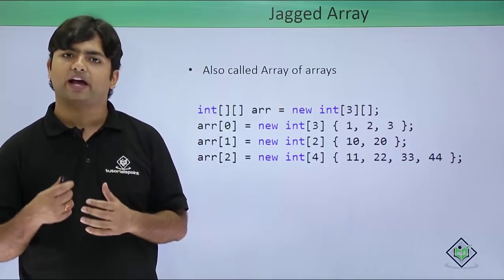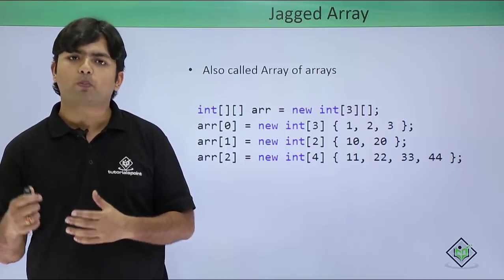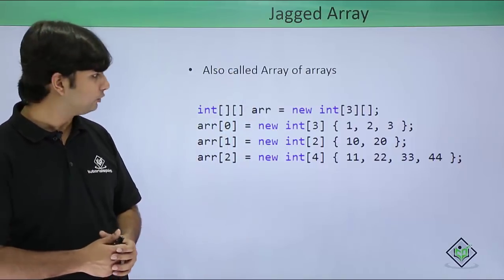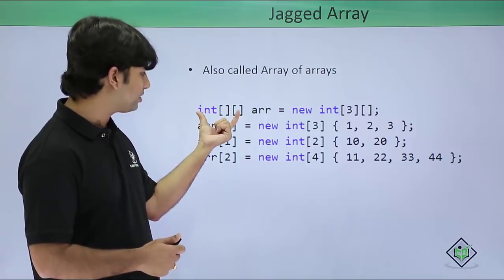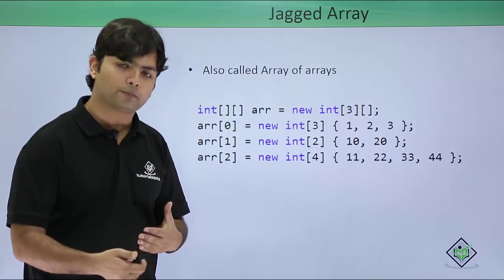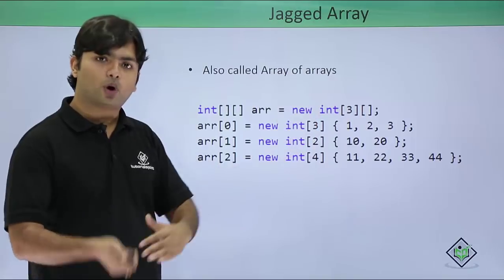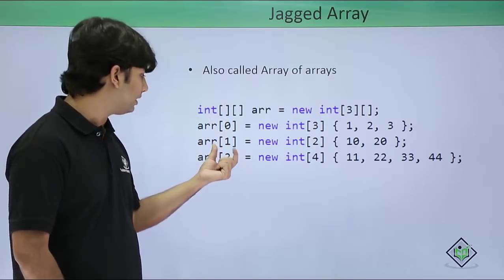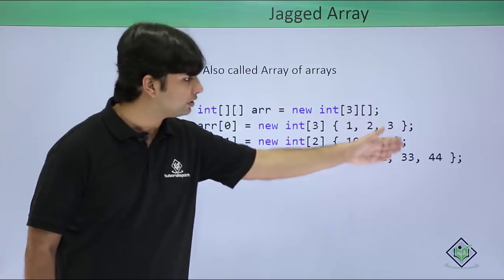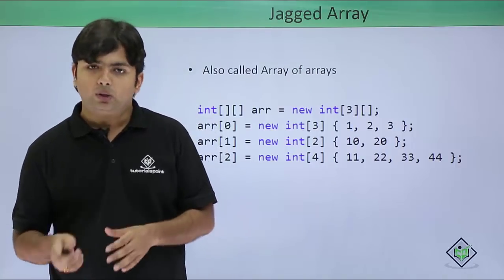The last type is the jagged array, also called array of arrays. For example, if you need to create multiple arrays in a program and want to bind them all into one array, you use a jagged array. The syntax shows integer array of arrays — I specify that I'm going to store three arrays inside, without specifying columns because these are separate arrays. After that I initialize each array separately at index 0, 1, and 2 with sizes 3, 2, and 4 respectively along with their elements.